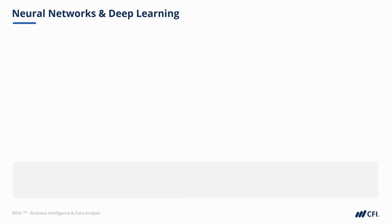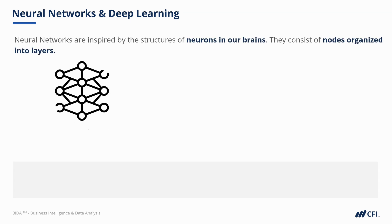Neural networks and deep learning are also part of machine learning. Neural networks are inspired by the structures of neurons in our brain, and they consist of nodes organized into layers.